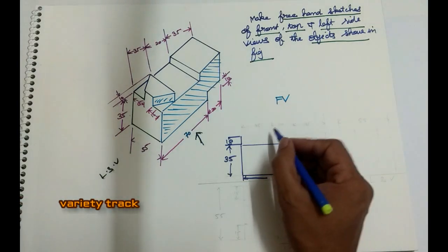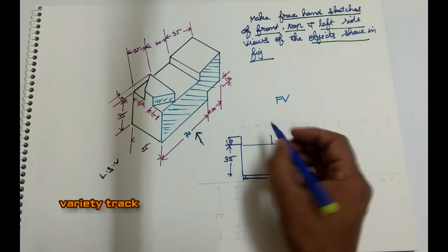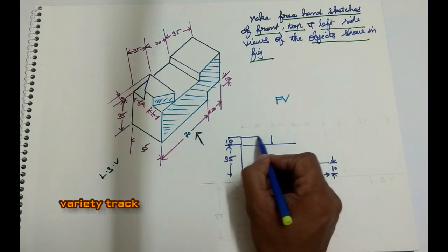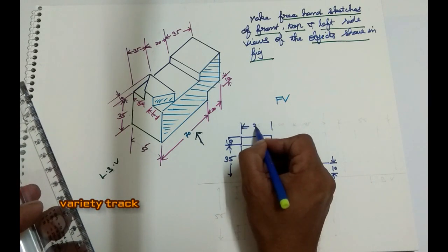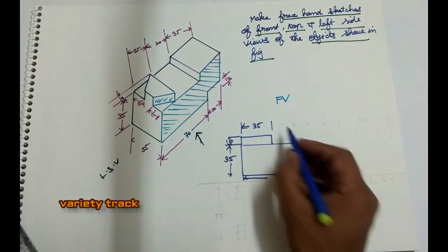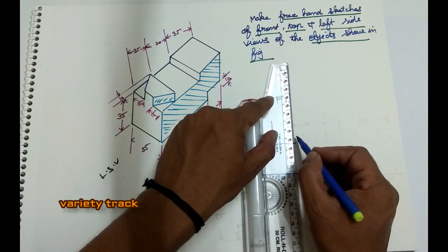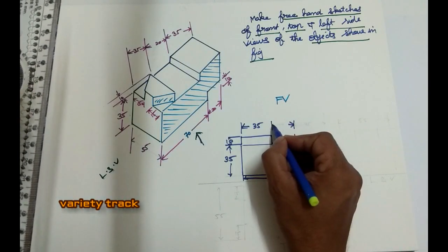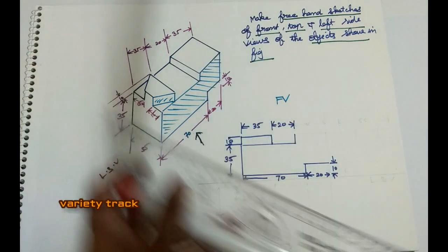So the distance is 35. The length is in the distance. 35 — this is 15, say 35 mark. In this step one, it makes 20.